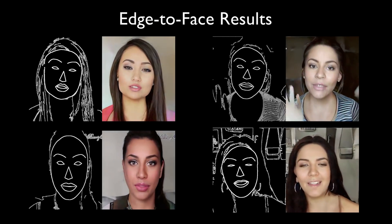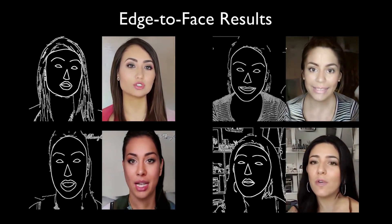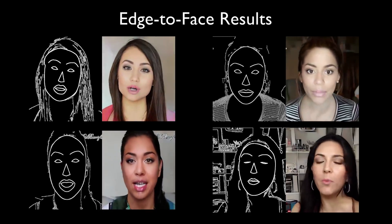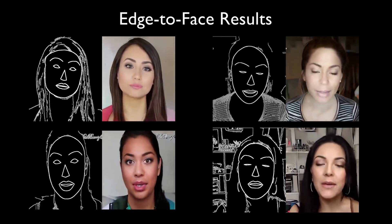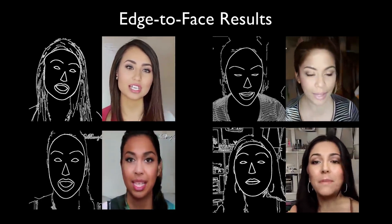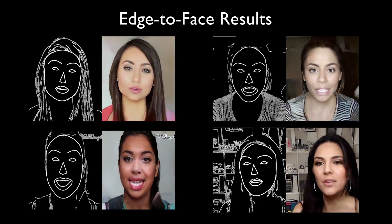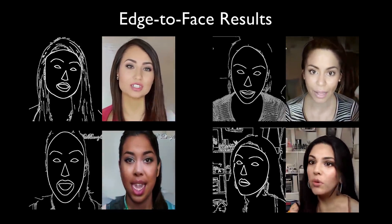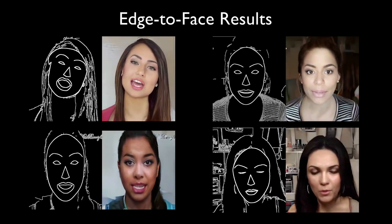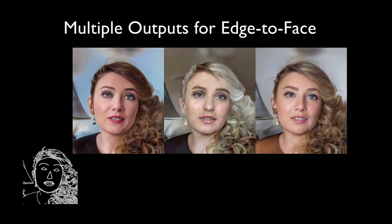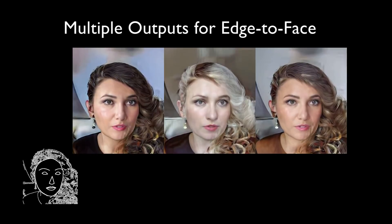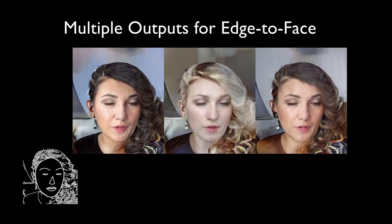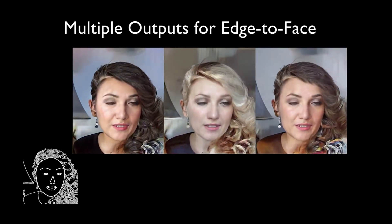In addition to synthesizing street scenes, we show our network synthesizing videos for other domains. For example, our network can transform edge map videos to videos of human faces. Here we show some examples of synthesized people talking. Our network can generate different people speaking given the same input edge maps. Note that the results are temporally consistent from frame to frame.